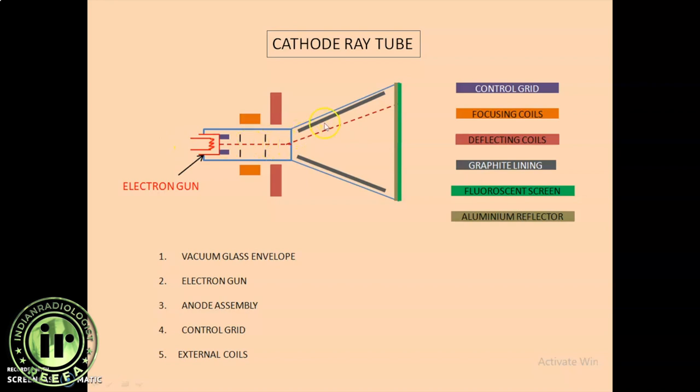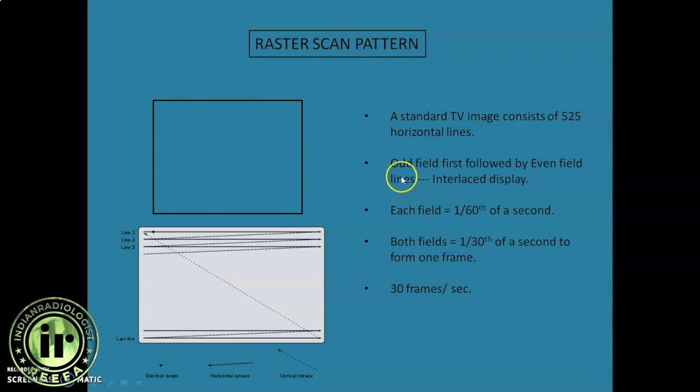So we have a cathode, an anode assembly, the coils, the control grid and the fluorescent screen. We have discussed the anatomy. Now we will look at how it functions. The electron dot that the beam pattern that strikes this fluorescent screen is not random. It follows a pattern called raster scan pattern.